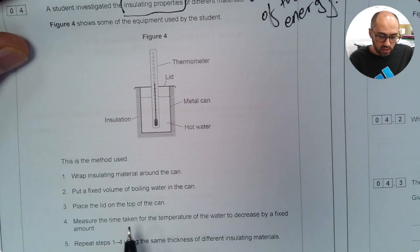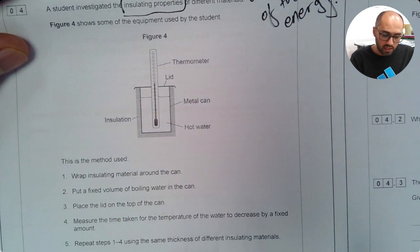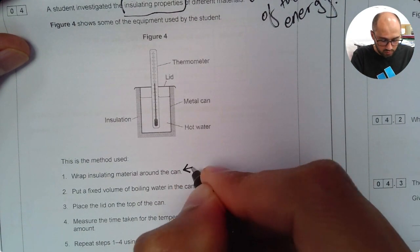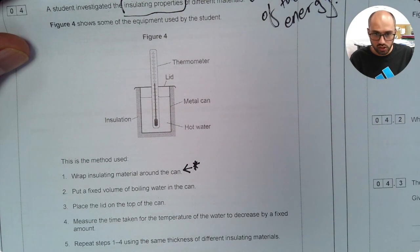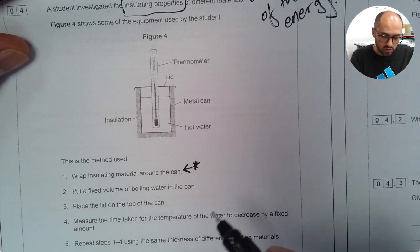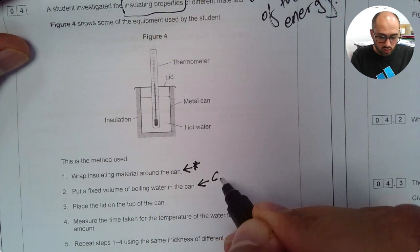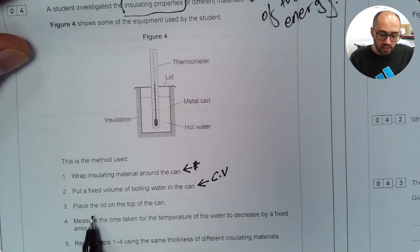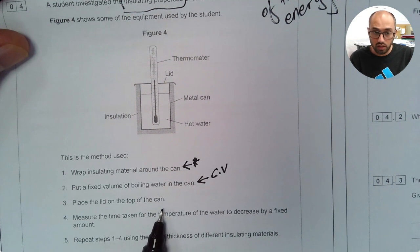Now they use this method. It says wrap insulating material around the can - this is something important because this is what they will change. Put a fixed volume of boiling water in the can - this is my control variable. Place the lid on the top of the can - this is to reduce heat losses.